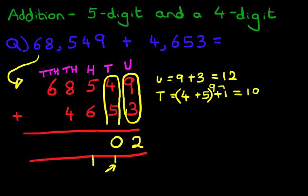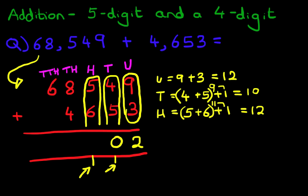Now let's add the hundreds column. That is this one here and don't forget the 1. We have 5 plus 6 plus 1. The first two numbers, 5 plus 6 is 11, plus the 1 is 12. So let's write that down. We've got 1 here and 2 here.